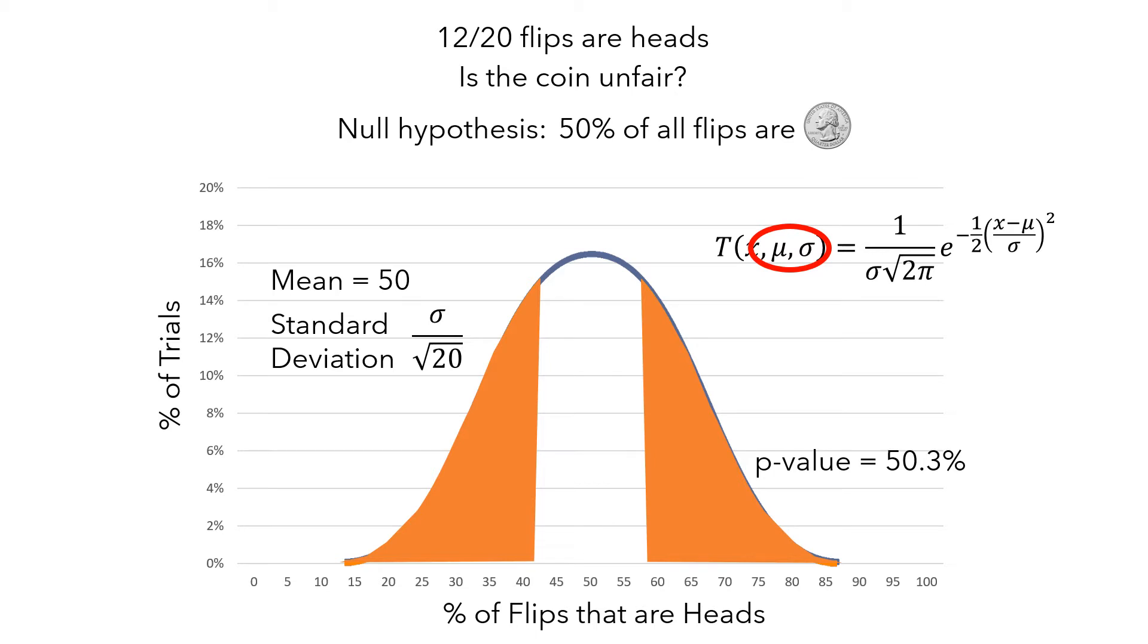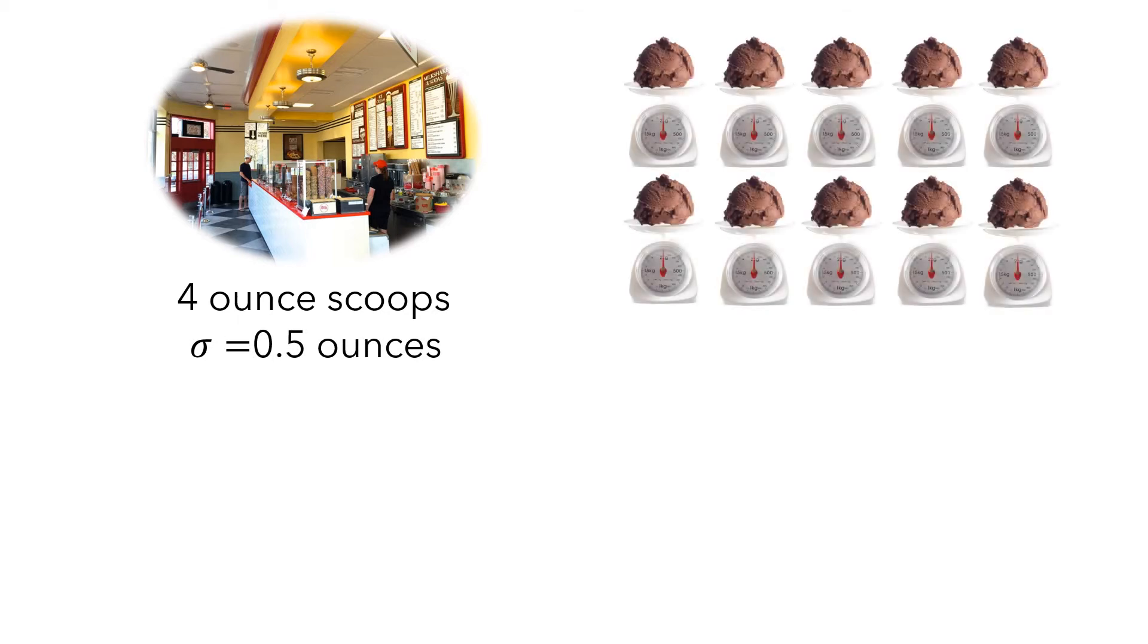Let's look at an example. Let's say your favorite ice cream shop claims to serve 4-ounce scoops of ice cream, and that there is a standard deviation of 0.5 ounces from scoop to scoop. So you purchase and weigh 10 scoops and get a sample average of 4.6 ounces.